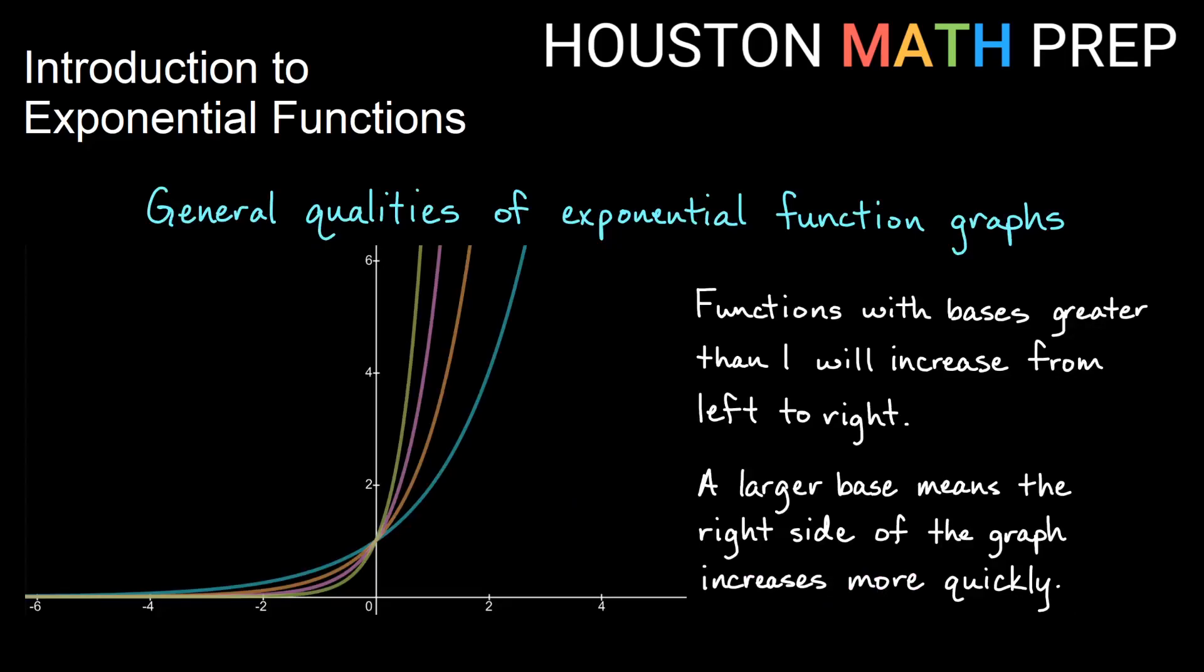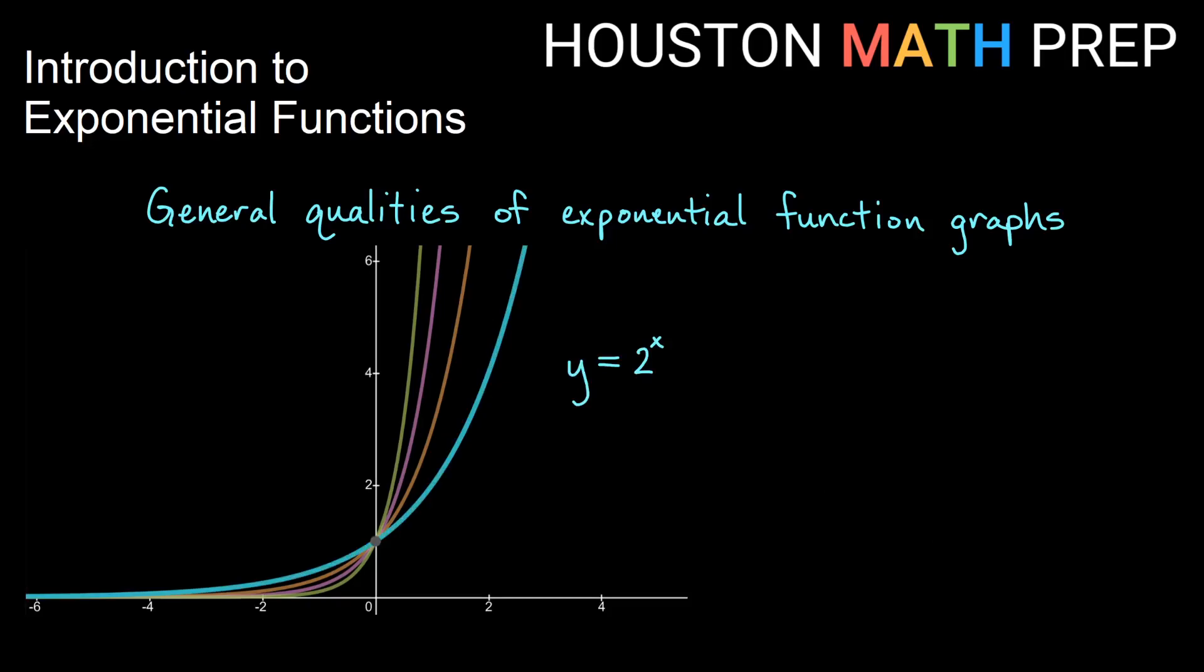So some general qualities of exponential function graphs that you'll find: your functions with bases that are greater than 1, so like our 2 to the x, that base was greater than 1, those will increase from left to right. A larger base means that the right side of the graph increases more quickly. So if we think about, I've got 2 to the x, that's my graph here. This next graph here is 3 to the x, so you notice it gets taller values more quickly. It reaches sky high more quickly than 2 to the x does after it passes this 0,1 point. You'll notice they all go through 0,1. There's 5 to the x, and then I've also graphed 10 to the x. It gets tall very quickly. We don't have to go very far out to the right before it gets tall.